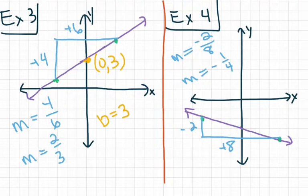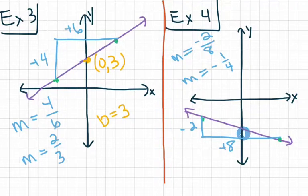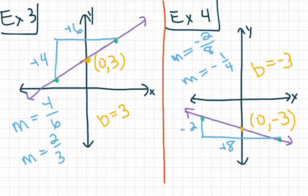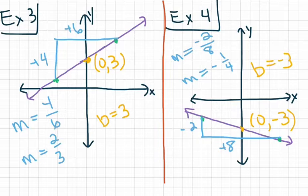Looking at our last graph, example four, the y-axis and the line clearly intersect right here. That point has a coordinate value of zero comma negative three, so my value for b is negative three. For your homework, all they're going to be asking you to do is identify the value for the slope and the value for the y-intercept. So for example four, your value for the slope would be negative one-fourth and your value for b would be negative three.